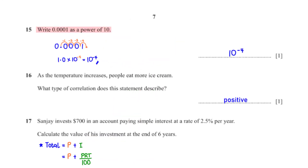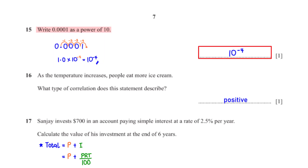Write 0.0001 as a power of 10. We move the decimal point to after the first non-zero digit. Since we moved 4 units to the right, we multiply 1.0 by 10⁻⁴. So 0.0001 = 10⁻⁴.